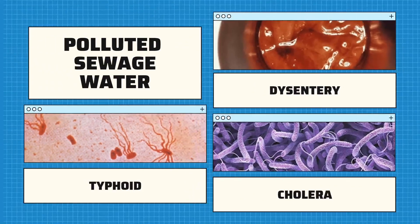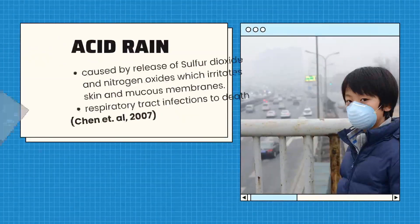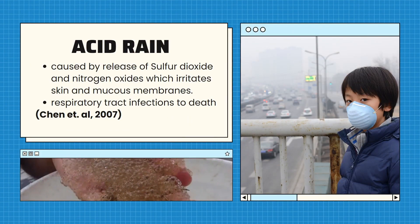Polluted sewage water can also cause certain diseases like typhoid, dysentery, and cholera. Furthermore, climate change can cause changes in precipitation and result in extreme weather events and rising sea levels, consequently affecting our health. Acid rain is one example of this side effect, which can be triggered by the release of sulfur dioxide and nitrogen oxides from burning fossil fuels.